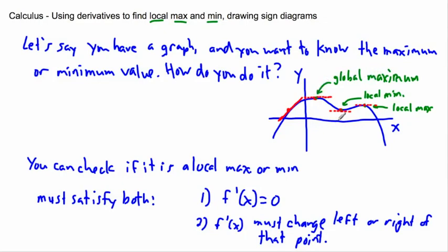Look at this other point. The derivative is zero there because it's flat — so it satisfies the first criterion. To the left of it the tangent would be some decreasing value, so the derivative is negative to the left. And to the right, the derivative would be positive. Did it change from negative to positive? Yes — so it's a local minimum. And over at the third point, from left it's positive slope, to the right it's negative slope, so positive to negative means a local maximum.